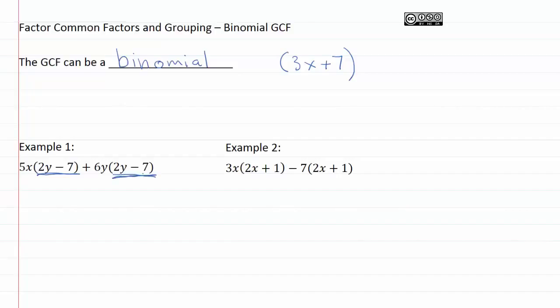We see that this is multiplied by whatever is out in front, and so we can actually divide this out on both sides. So that is going to be our GCF, 2y minus 7.